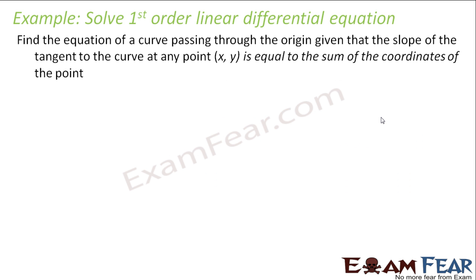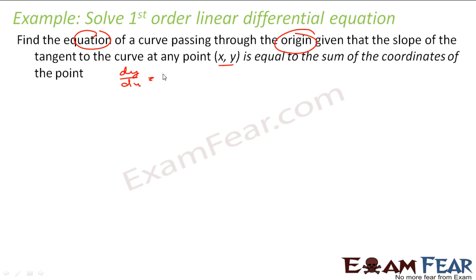So we have to find the equation of the curve passing through the origin, given that the slope of the tangent of the curve at any point — that is dy/dx — is equal to the sum of the coordinates of the point, that is x plus y. That is what is given, and we have to find the equation of the curve.